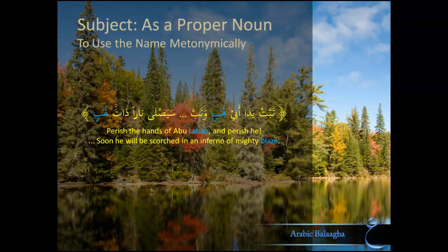Allah subhanahu wa ta'ala makes this very clear in Surah Masad, where He says: 'Tabbat yada Abi Lahabin wa-tabb. Ma aghna 'anhu maluhu wa ma kasab. Sa-yasla naran dhata lahab.' The first use of the word 'Lahab' is in reference to the person, and the second is in reference to the fire. Allah subhanahu wa ta'ala uses the similarity in sound to link the meanings together, indicating that Abu Lahab is destined for Hell.